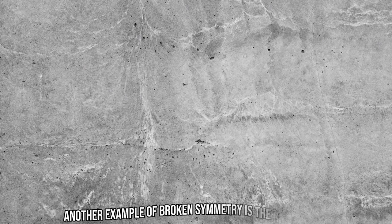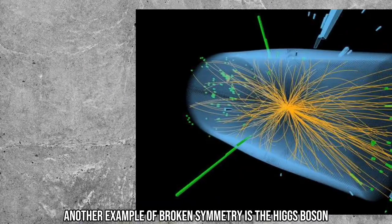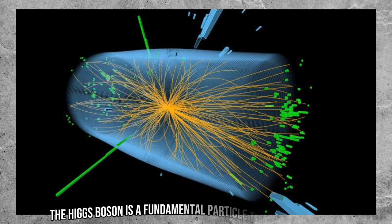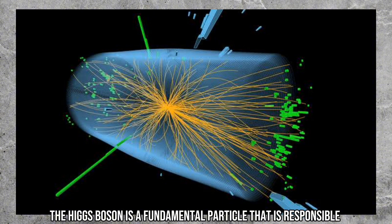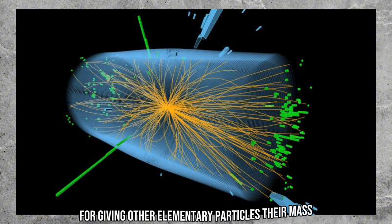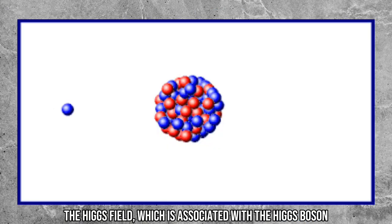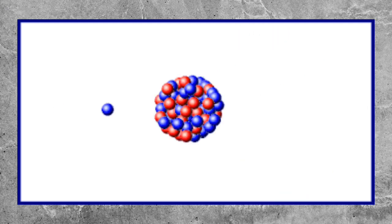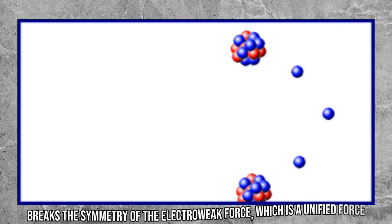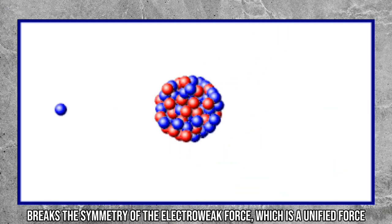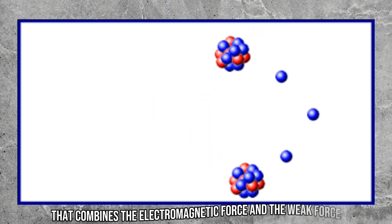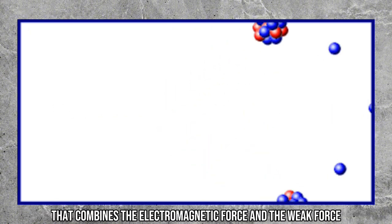Another example of broken symmetry is the Higgs boson. The Higgs boson is a fundamental particle responsible for giving other elementary particles their mass. The Higgs field, which is associated with the Higgs boson, breaks the symmetry of the electroweak force — a unified force that combines the electromagnetic force and the weak force.